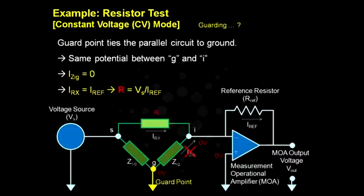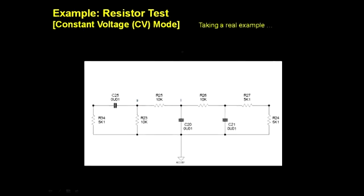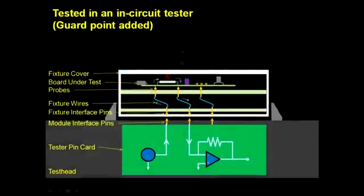This method is implemented during test debug. The test engineer will find in the schematics points across adjacent components to the DUT so that he can place guard points and define them in his test. The tester will automatically place relevant resources to ground that point during the test.